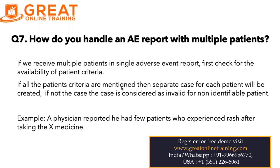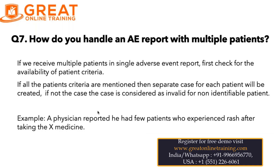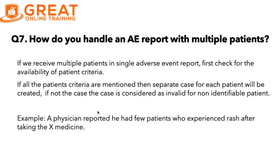The interviewer might ask a scenario like: a physician reported that he had a few patients who experienced rash after taking X medication. In this scenario, we can clearly see the reporter details are present, but the patient details are described only as 'a few patients,' which makes the report invalid under the non-identifiable patient criteria. These are the two key points you need to answer for this question.